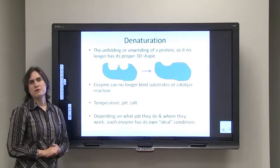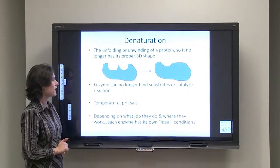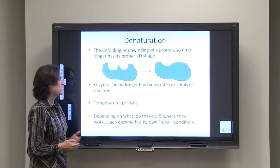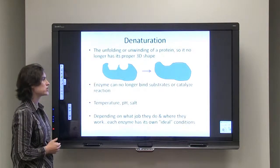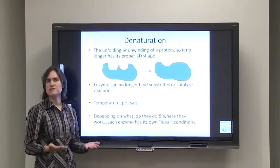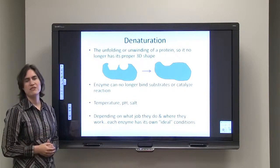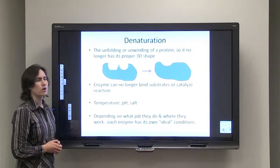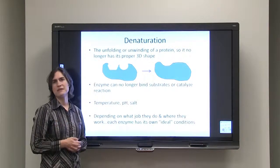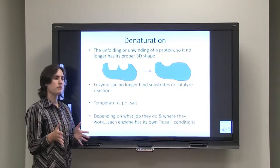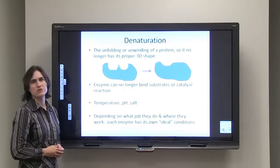Many things can cause a protein to denature. Temperature, if it gets too hot, can cause denaturation. pH, if it's too high or too low, can cause denaturation. The same is true for salt concentration. The ideal temperature, pH, and salt concentration depends on the enzyme — what job it does and where it works. For example, enzymes in the stomach work at pH 2, while enzymes in the blood work near pH 7. If you moved those blood proteins into the stomach, the low pH might cause them to denature. Each enzyme has its own ideal conditions.